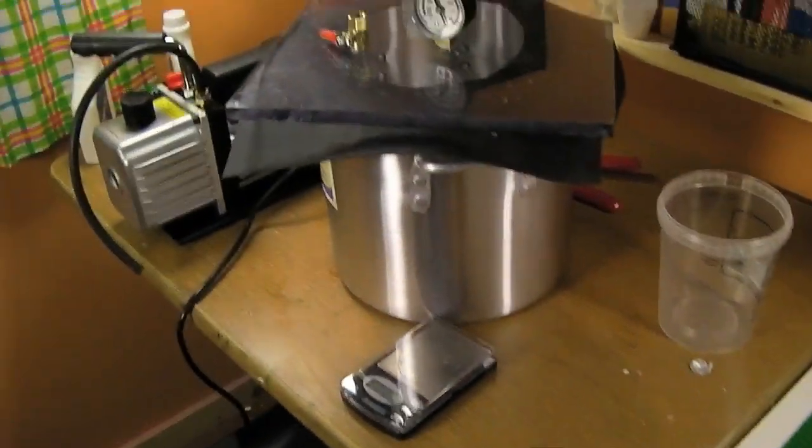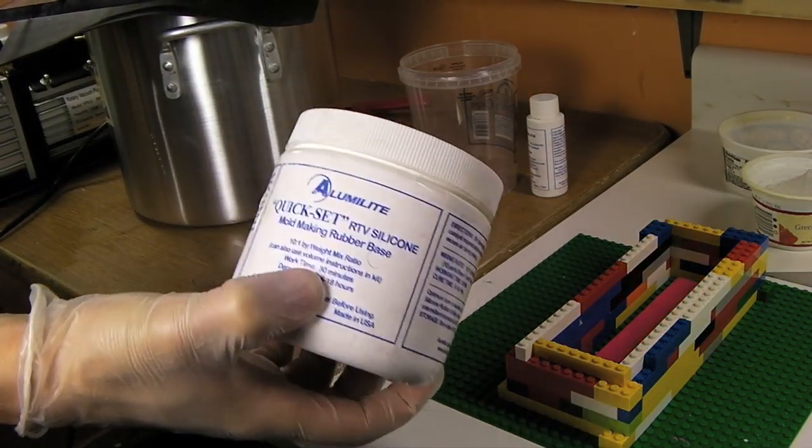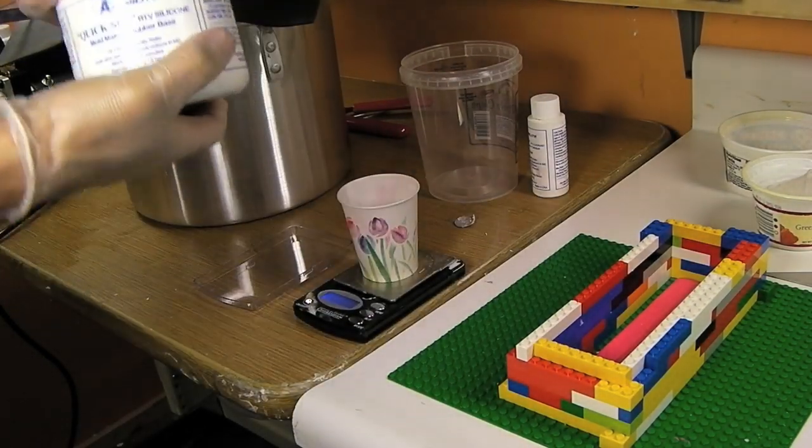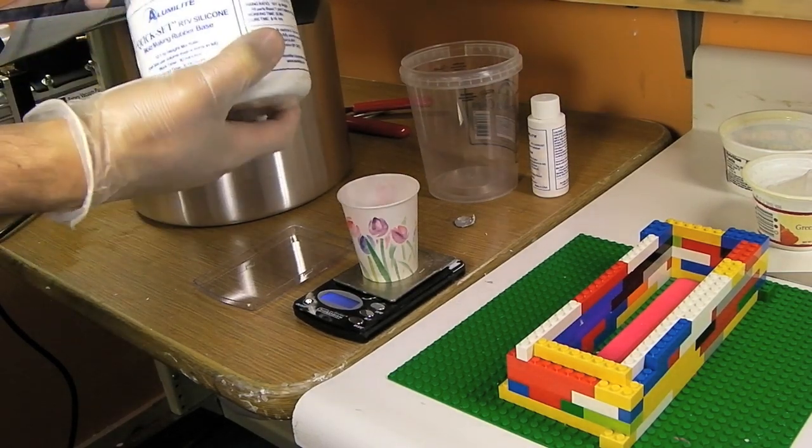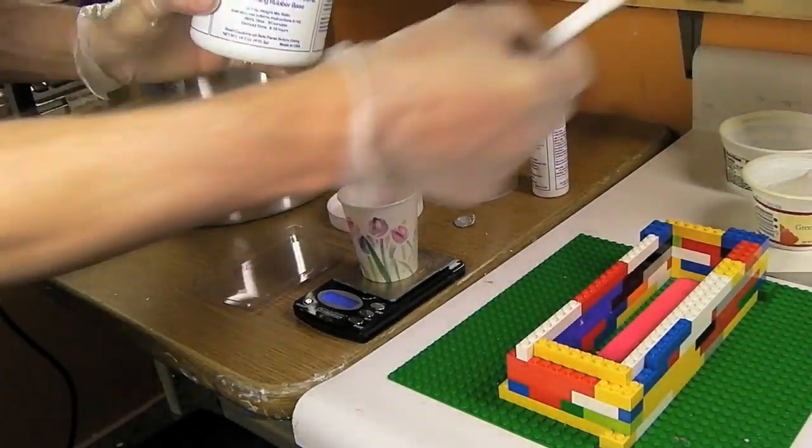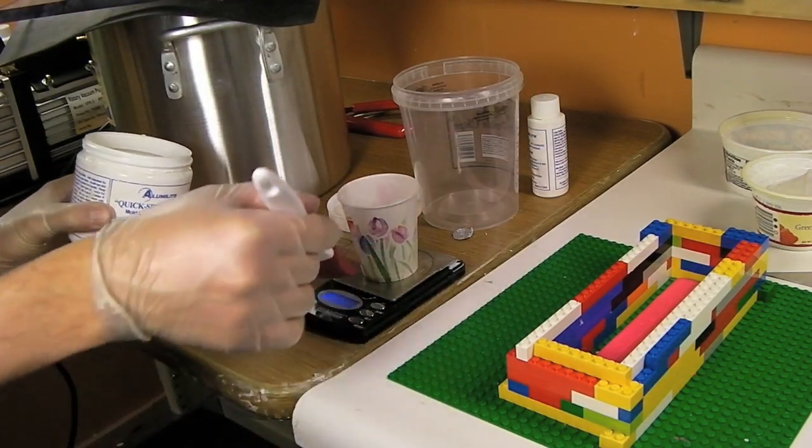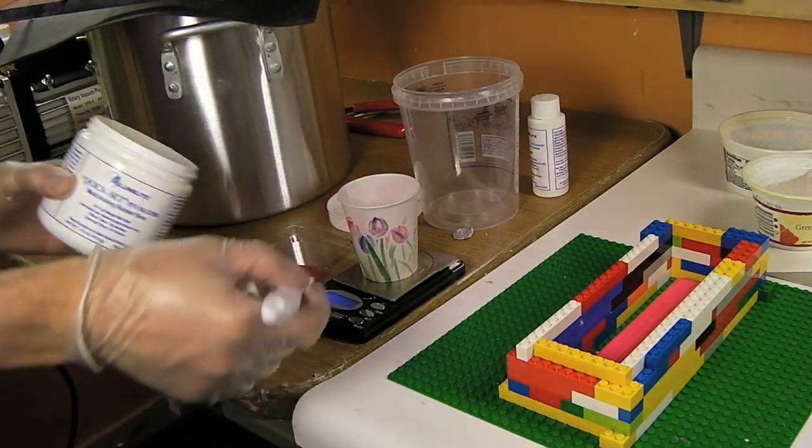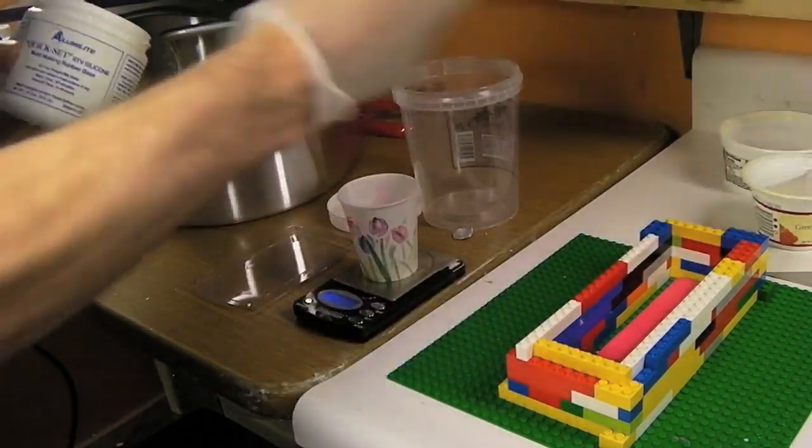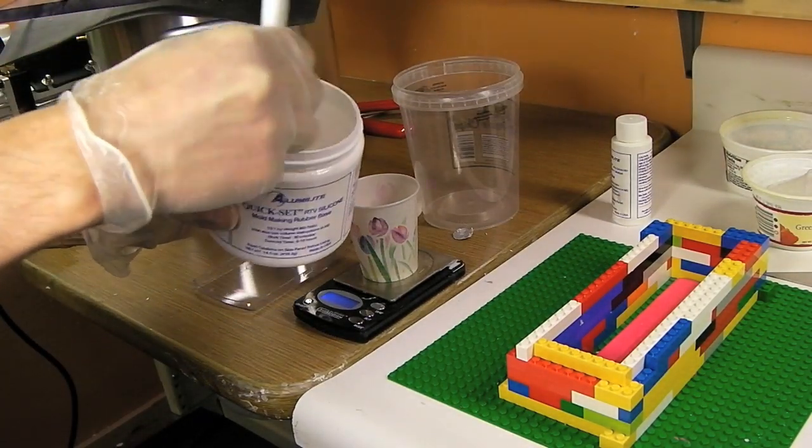The RTV silicone that I'm using is Alumilite. I'm actually going to switch to different stuff after I've finished what I have. I've got this container and another one. I mean it works, it's just I've never been super happy with it. What I'm going to do is measure out using a scale my material, 10 to 1 mix ratio, so 10 parts of this to one part of the hardener. First thing you want to do is always stir this up. I'm just using a spatula I got super cheap at the box store.